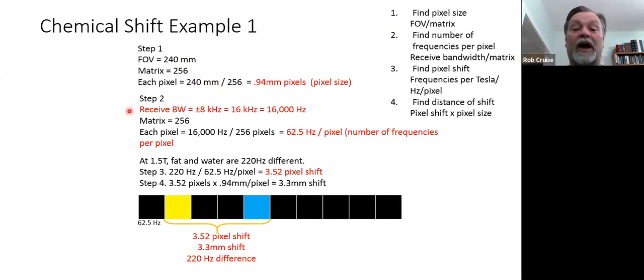Step two, we need to know our bandwidth. So if we have plus and minus eight kilohertz, that means we have isocenter and we have eight kilohertz above and eight kilohertz below isocenter. So eight plus eight equals 16 kilohertz is our total range of frequencies on our receive bandwidth. This is in kilohertz, and we know that our frequency chemical shift is measured in Hertz. So we need to change this to Hertz. So 16 kilohertz translates into 16,000 Hertz. So we take our 16,000 Hertz and our matrix of 256, and now we divide that and we get 62.5 Hertz per pixel. So that's each pixel has 62.5 Hertz within them.